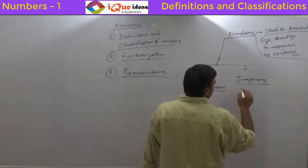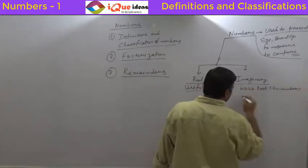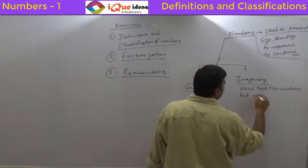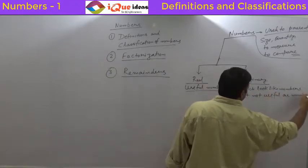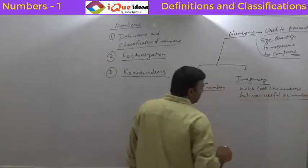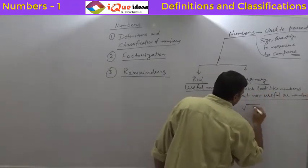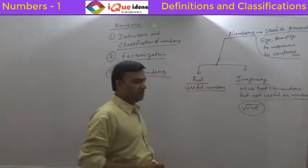Those numbers which look like numbers but not useful as numbers. As of now, you just need to understand any number which is square root of a negative number is called imaginary number.